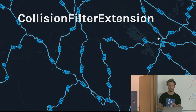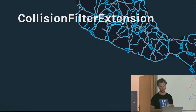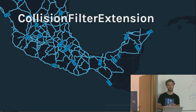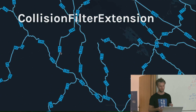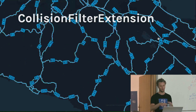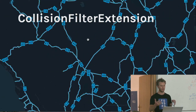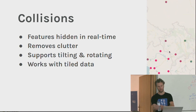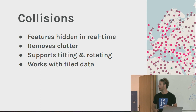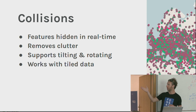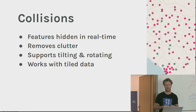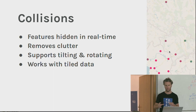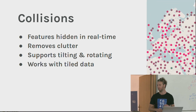On to the first extension I want to talk about: it's called the collision filter extension, which basically lets you hide points or features on your map so that they don't collide with each other. Here I'm using it to add a label layer to a road network in Mexico, saying I don't want them to collide with each other as I rotate and tilt. Here's another example with around 7,000 cities across the whole world. If I turn the filtering off, you can see the mess when zoomed out. But with filtering on, as I zoom in, it's automatically popping points in and out for me.